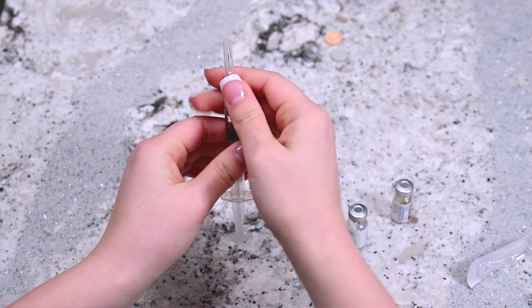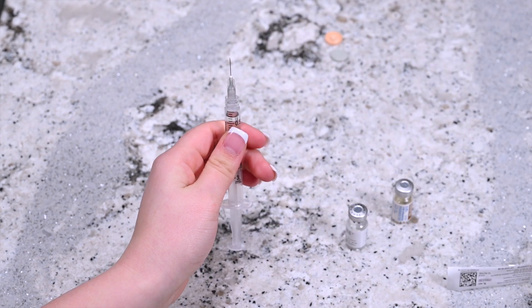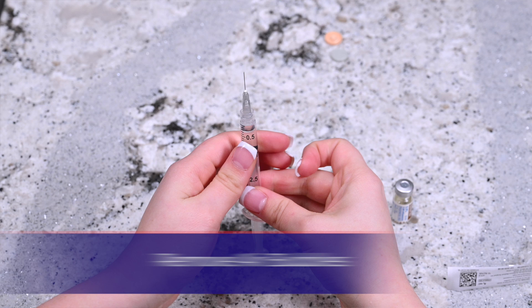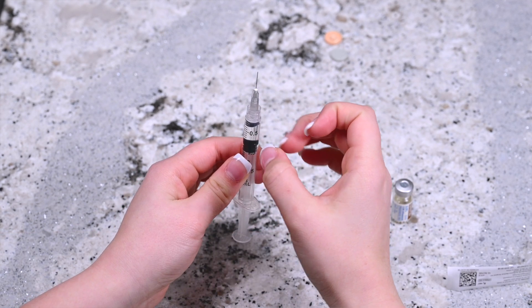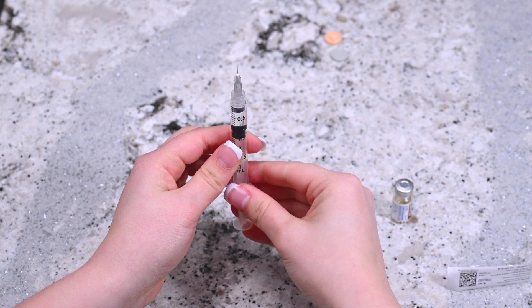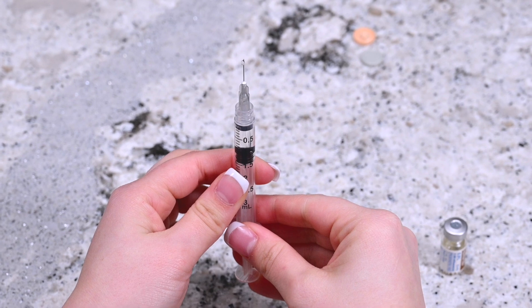Hold the needle upright and remove the cap. Don't let the needle touch anything, including your hands. While holding the needle upright, gently tap the side of the syringe until the air bubbles migrate to the top. Apply slight pressure on the plunger until a drop of liquid appears at the tip of the needle.